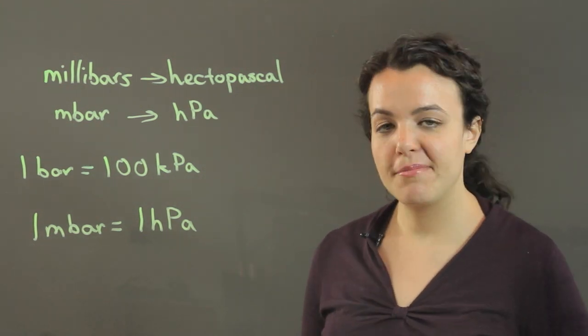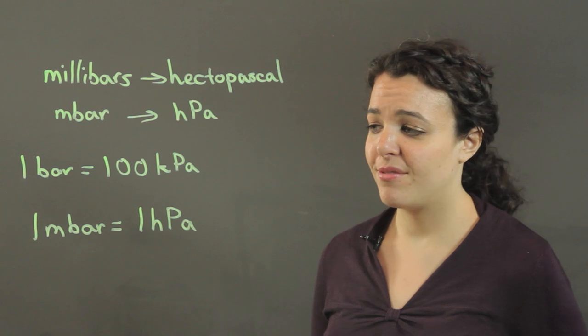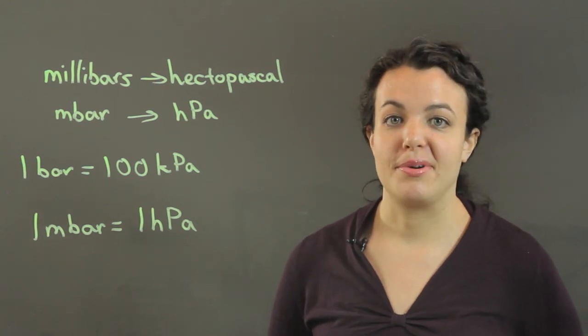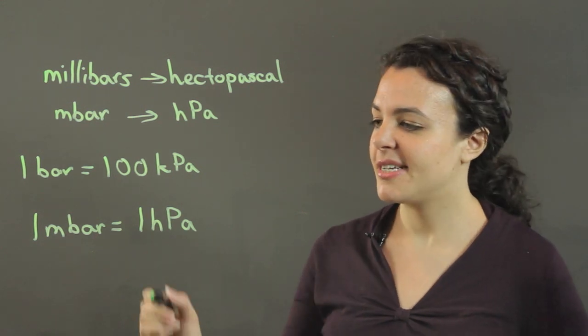So if I have 10 millibars, I have 10 hectopascals. If I have 30,000 millibars, I have 30,000 hectopascals. It's a nice easy conversion.